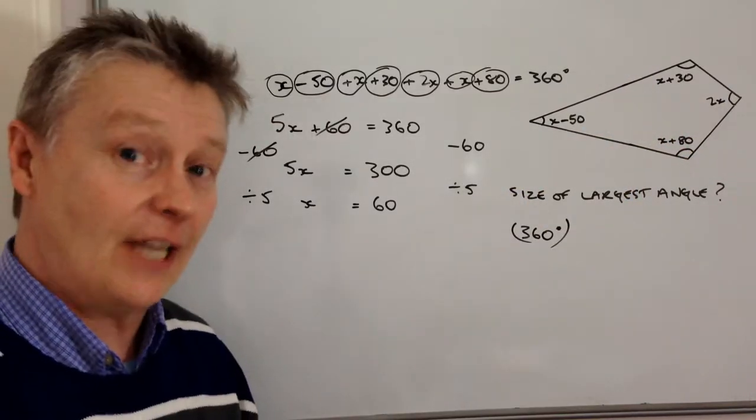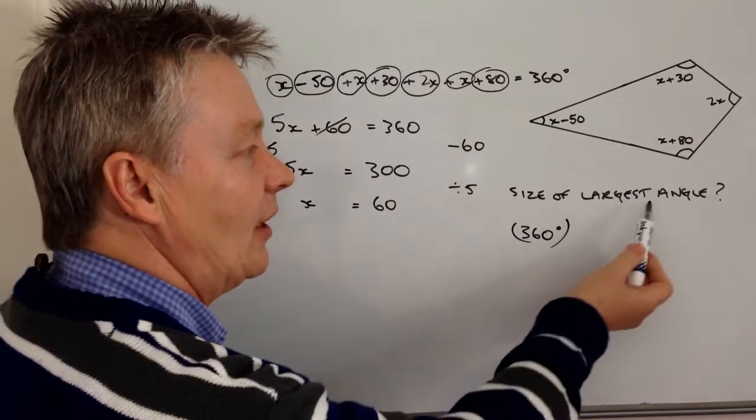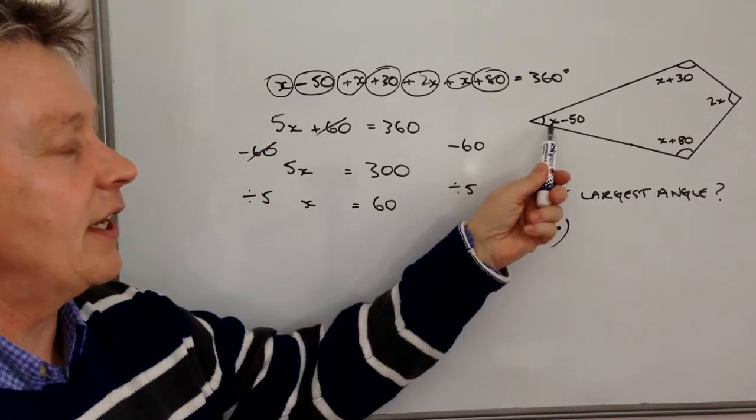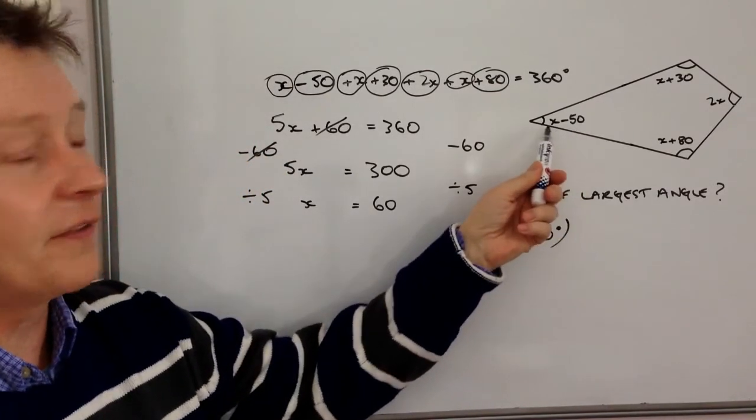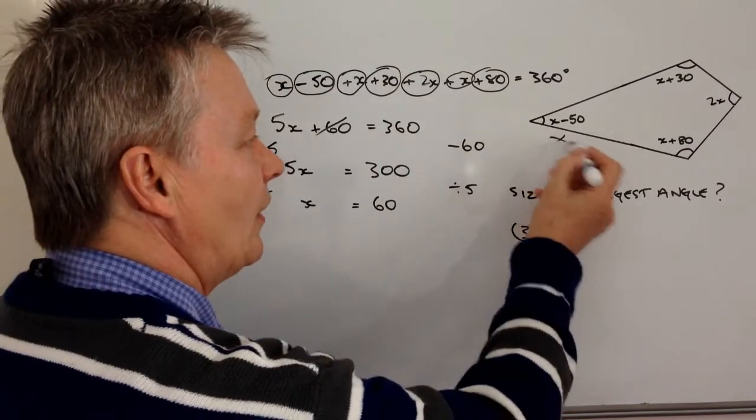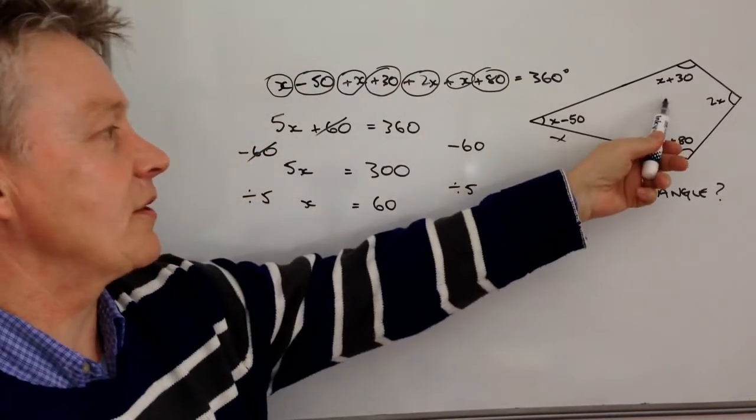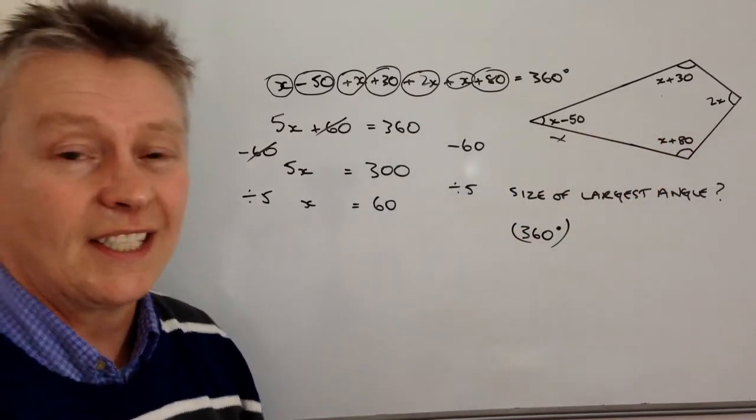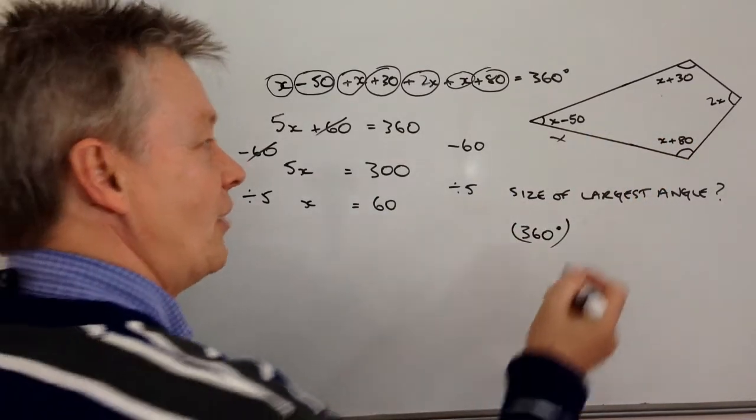I don't need to work out every single one because I'm looking for the largest angle. If I look at this one, it's going to be 60 minus 50, so this is going to be 10 degrees. So I'm not really worried about that one. This one at the top here is going to be 60 plus 30 is 90 degrees. Not really so concerned.